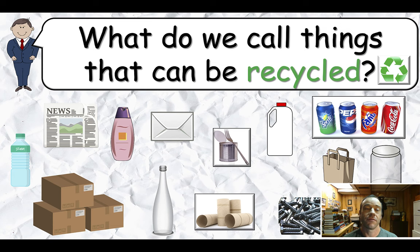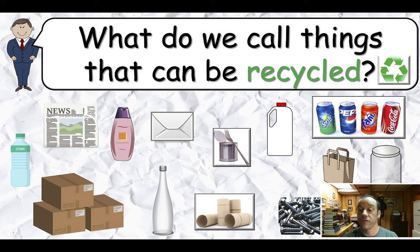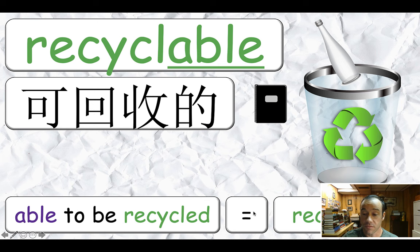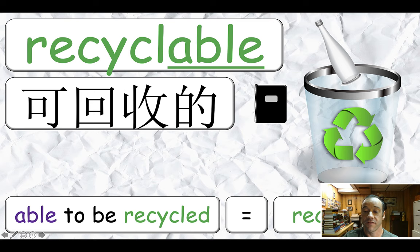What do we call things that can be recycled? So I'm making sure they learn all the vocab: recycle, recycling, reduce, reuse, recycling bin. And then this word — very important. Things that we can throw in the recycling bin are called recyclable. Able to be recycled equals recyclable. They can see the word 'able' at the end. Some of them might have already learned this suffix.